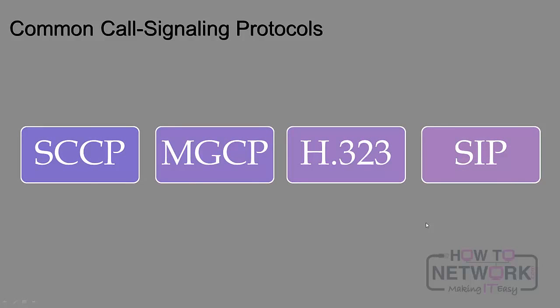When we talk about call signaling, voice gateways are signaled or have call signaling occurring with one of a number of different protocols. The four protocols that you're going to primarily deal with are shown here on the screen. We have SCCP which is the skinny call control protocol. We have MGCP the media gateway control protocol. We have the standard H.323 and we have the other standard SIP.